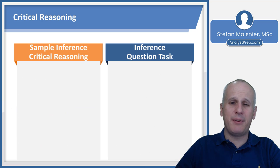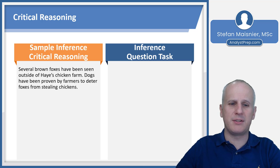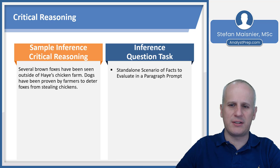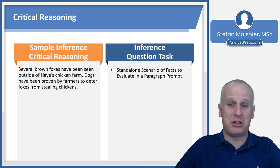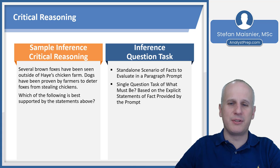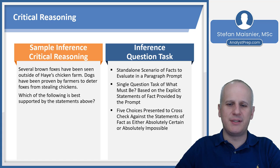The other major format of critical reasoning is the inference question, which just asks what must be. We have a similar but different paragraph: several brown foxes have been seen outside Hay's chicken farm, and dogs have been proven by farmers to deter foxes from stealing chickens. There is no conclusion here — no subjective claim or decision, just standalone facts to evaluate. The task is some variation of 'which of the following is best supported by the statements above,' 'which must be true,' or 'which can be logically inferred' — always distilled down to what must be true based on explicit statements of fact.